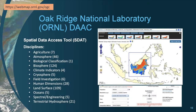The Oak Ridge National Laboratory Spatial Data Access Tool, or SDAT, is an OGC-based web application to visualize and download spatial data in various user-selected spatial temporal extents, file formats, projections, and web service types.